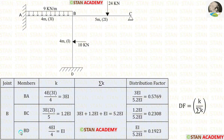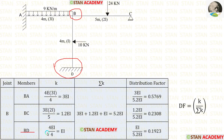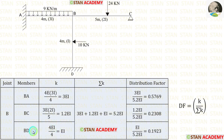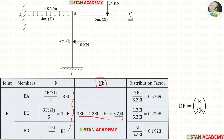Now let us find the stiffness for BD. From joint B, looking at point D, there is a fixed support, so the stiffness formula is 4EI/L. The moment of inertia for BD is I and the length is 4, giving a stiffness of EI for BD. Adding all three values, sigma K equals 5.2EI.